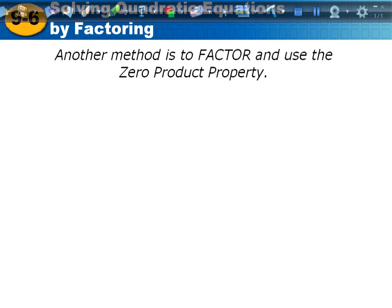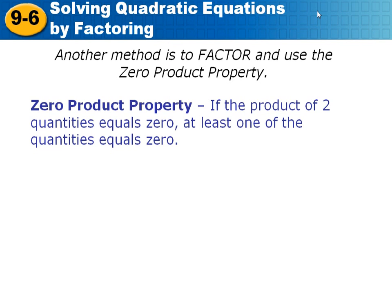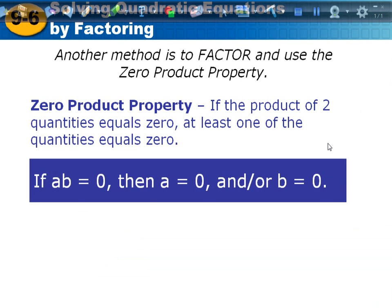Another method is to factor and use the zero product property. The zero product property says: if the product of two quantities equals zero, at least one of the quantities equals zero. If a times b equals zero, then a equals zero and/or b equals zero. That's what the zero product property says. Write down what is in the blue box — you do not have to write the words, just what's in the blue box. Feel free to pause the video to get that down.